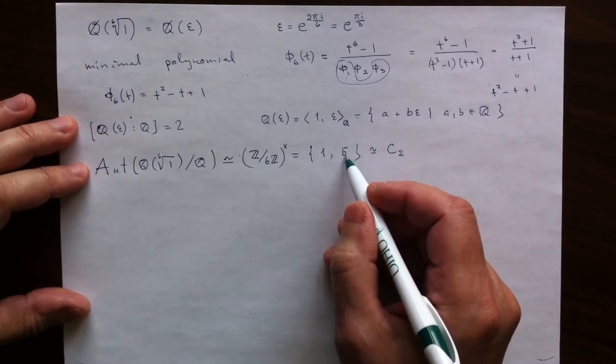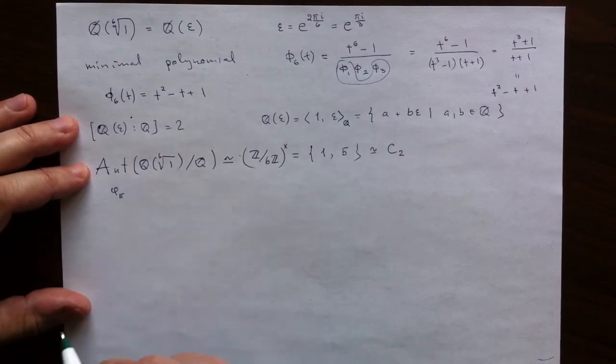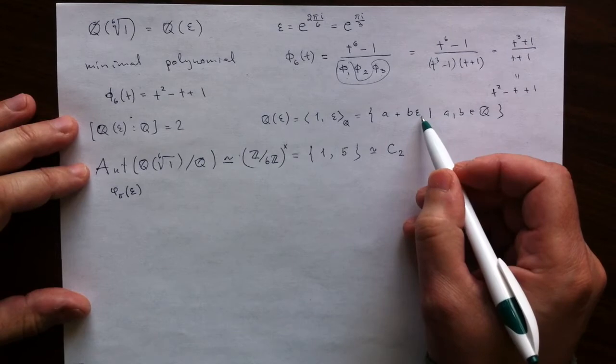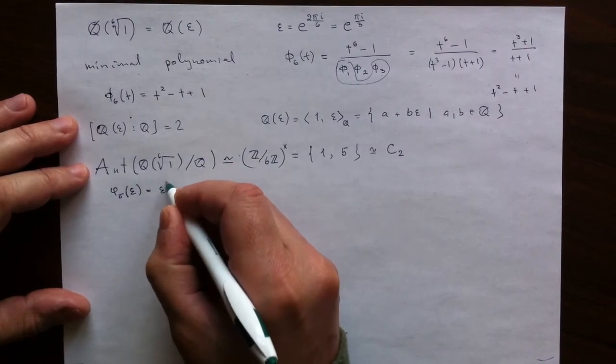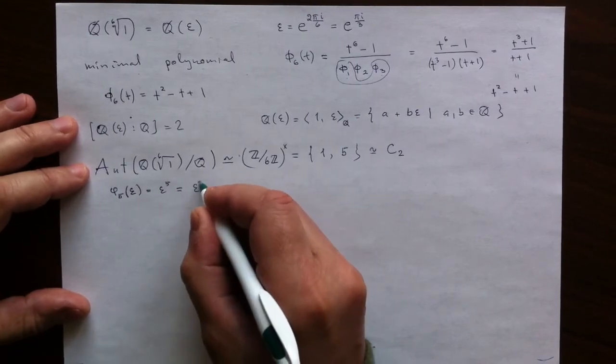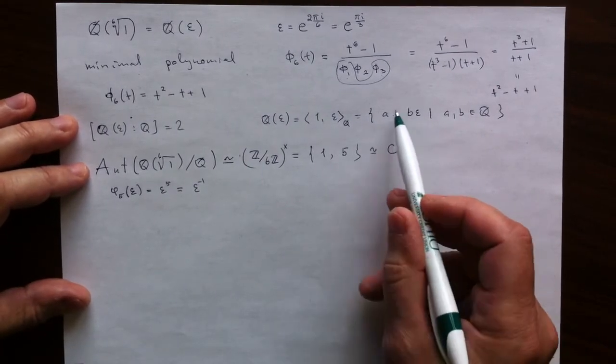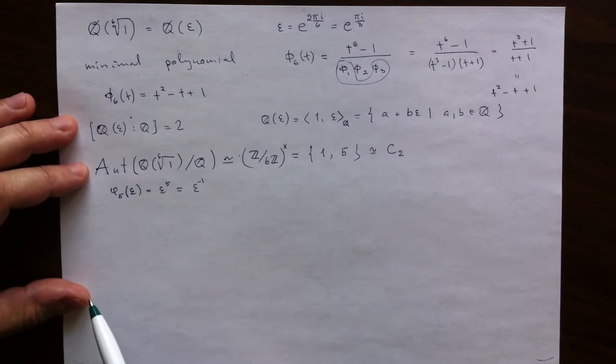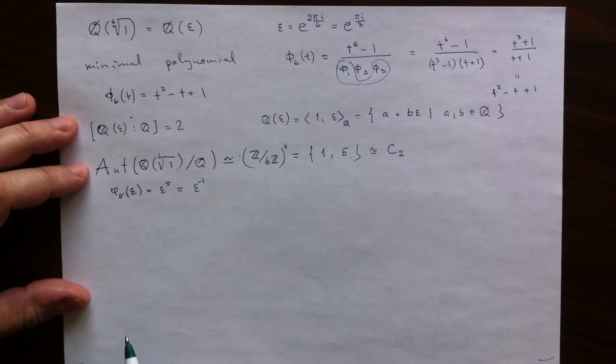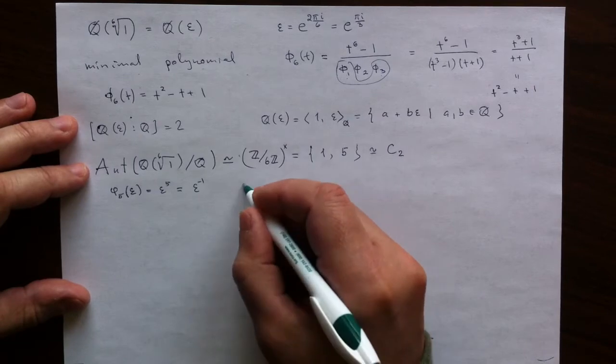And the interesting non-trivial element is the automorphism labeled by 5, which is completely determined by what it does to the non-trivial basis element. And it is raised to the fifth power. And the fifth power is really the same as negative power, negative first. So this effectively is complex conjugation acting on those complex numbers. It leaves these numbers closed. So it becomes an automorphism of this extension. So this is just the incarnation of complex conjugation.